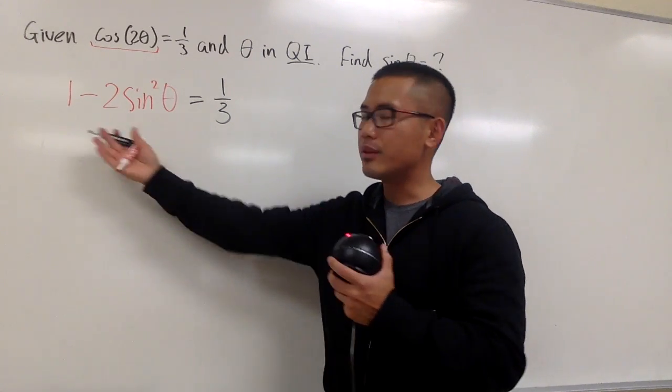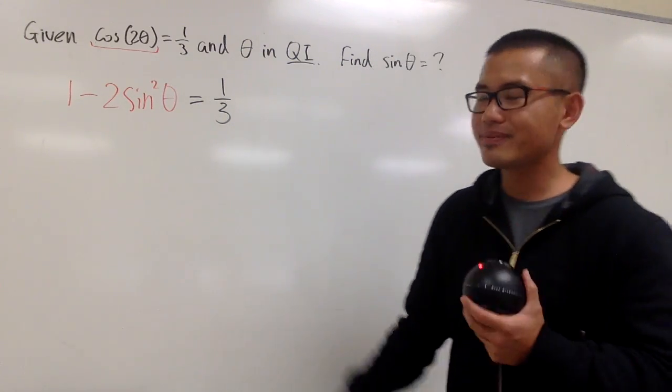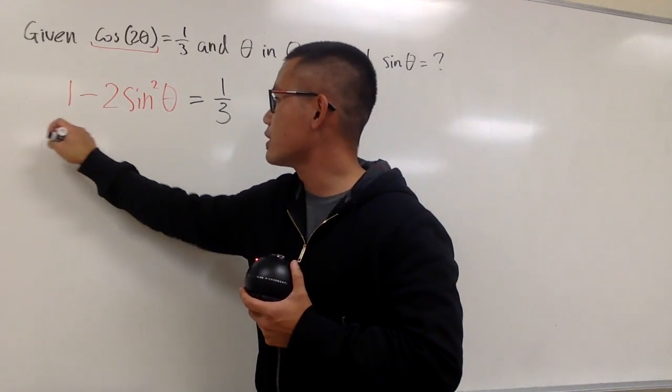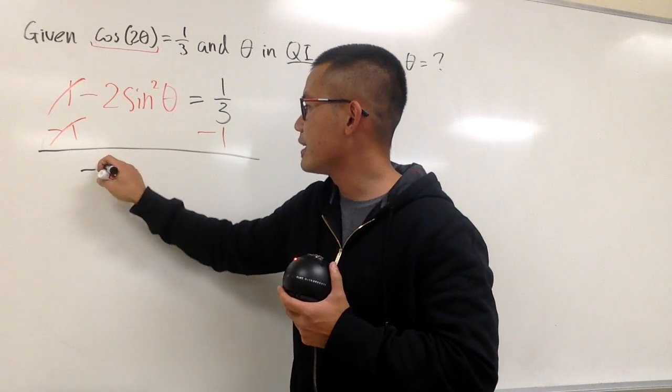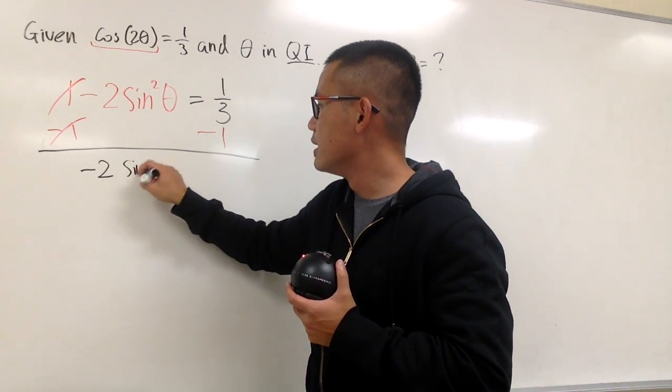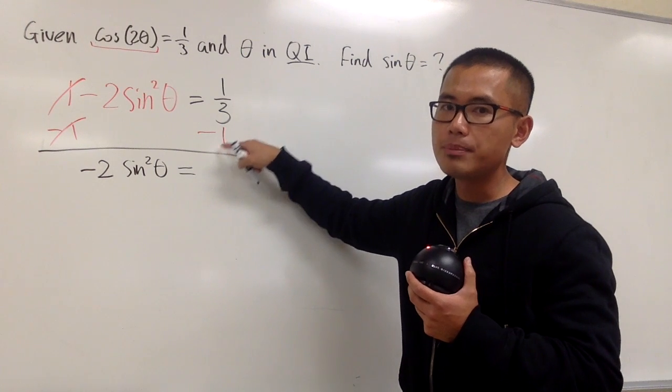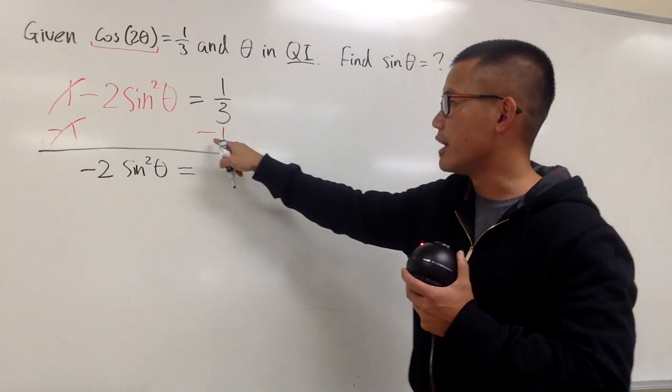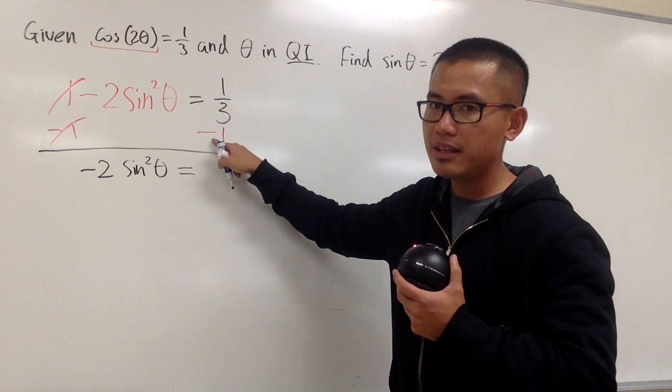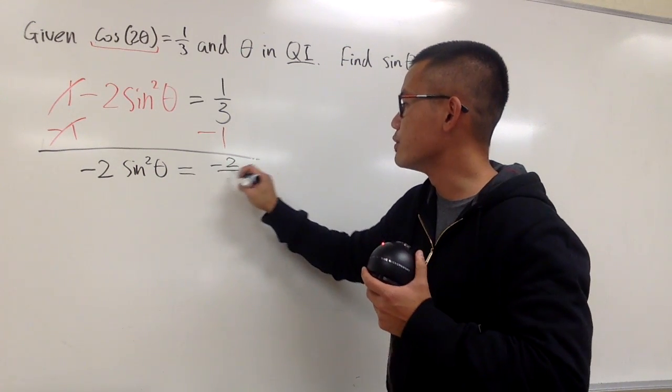And now, we just have to continue to solve for sine theta from this equation. So first, we will just go ahead, subtract 1 on both sides, cancel this out, and then we will have negative 2 times sine squared theta, and this is equal to 1 third minus 1. Get the common denominator for this, which is the same as saying 1 third minus 3 over 3, and you will end up with negative 2 over 3.